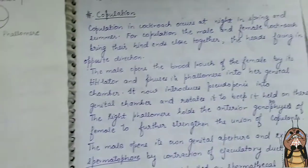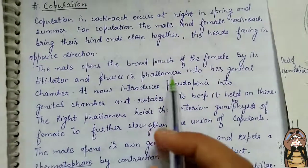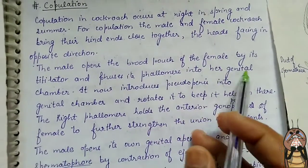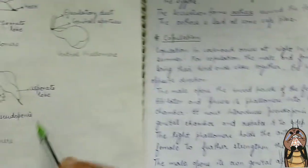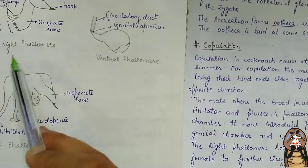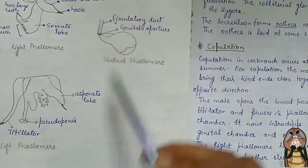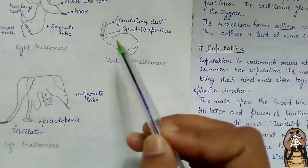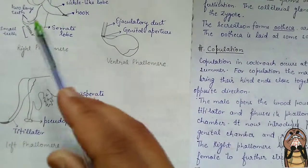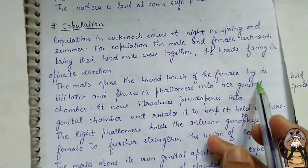The male then pushes the phallomere into her genital chamber. There are three phallomeres — the right, left, and ventral phallomere. The brood pouch is opened by the titillator, and the phallomere is inserted into the genital chamber of the female.